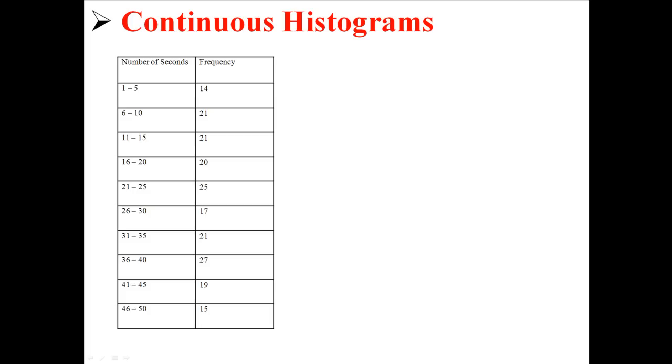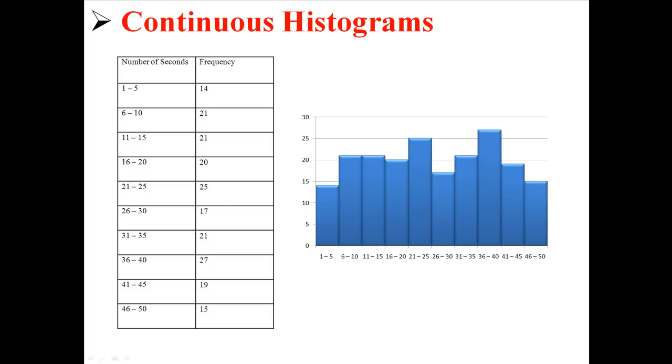So that's what I've done here. I've created intervals of 5, going from 1 to 5, 6 to 10, 11 to 15, all the way up to 46 to 50. Then I'm counting the frequency of values that fall within those ranges. And with that, I can now create a histogram with this continuous data.